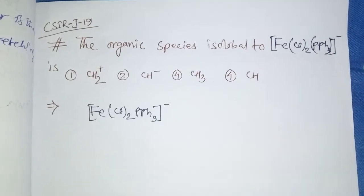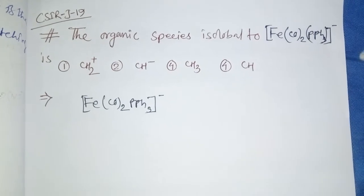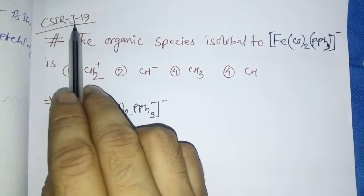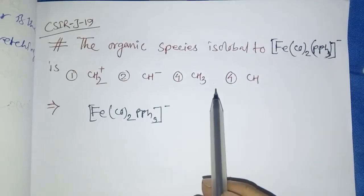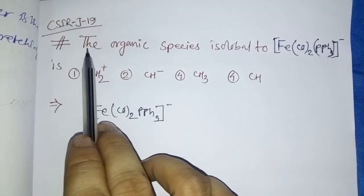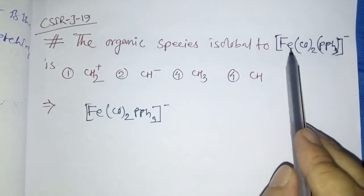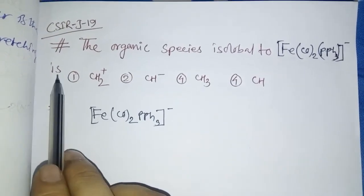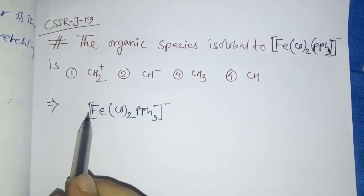Good evening friends, this question came this year CSR June 19. This question is very easy from the isolable topic. The question asks which organic species is isolable to this transition metal complex. Let's see which one is correct.